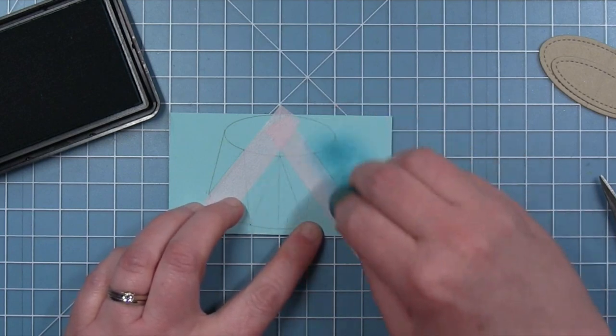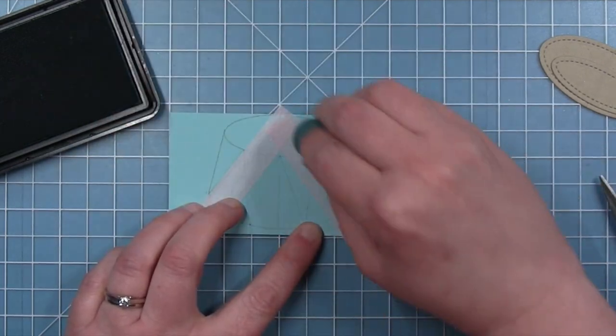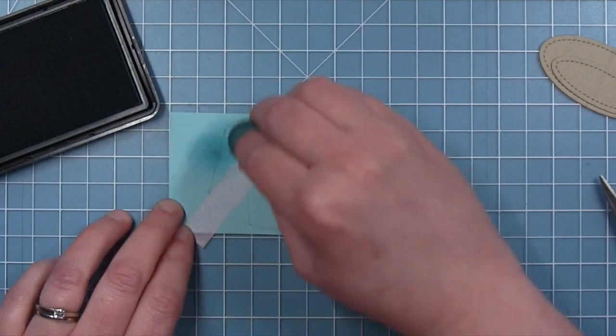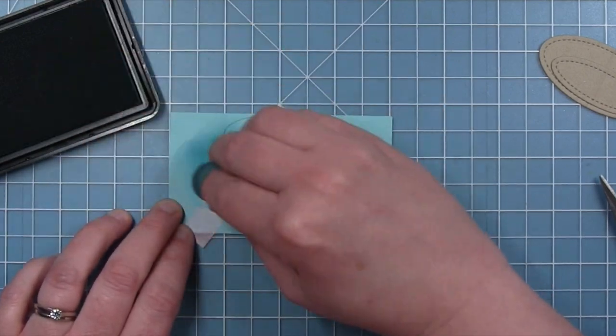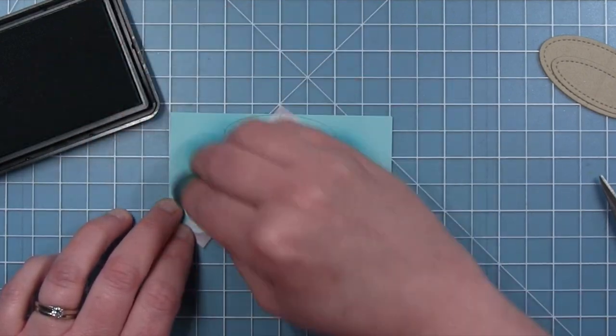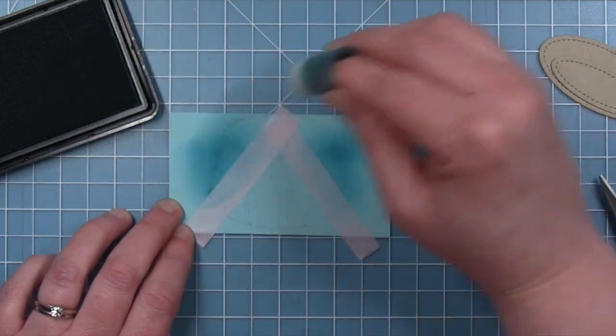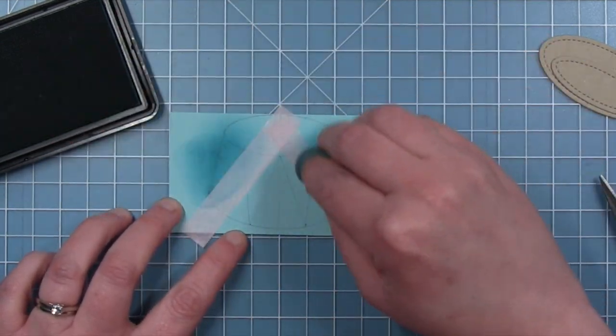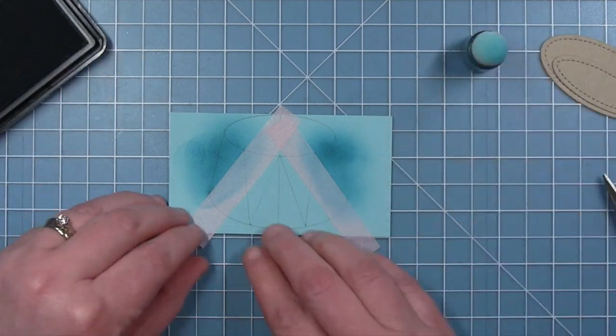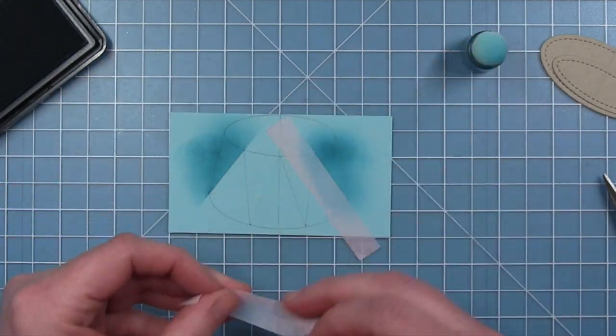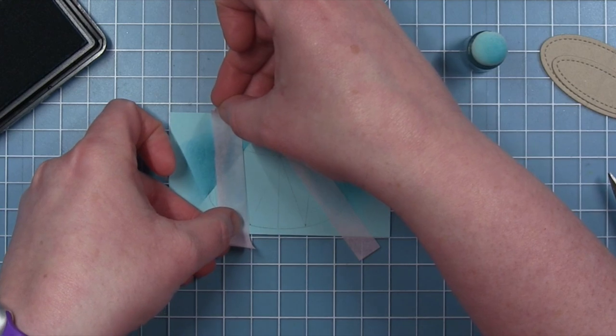And it doesn't matter that I'm going to go off the sides and pass my pencil line, because I'm going to be cutting that part off once I get all my inking done. It also doesn't matter if I go on the top because I will be covering that up with a die cut stitched oval. So now I can pull off that tape I'm using as a mask.